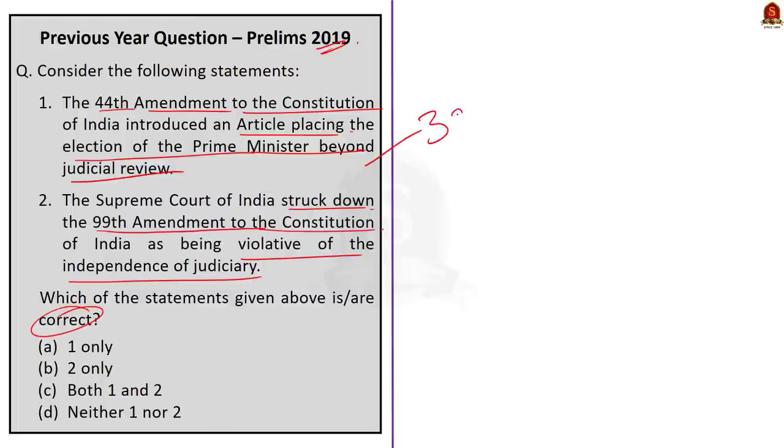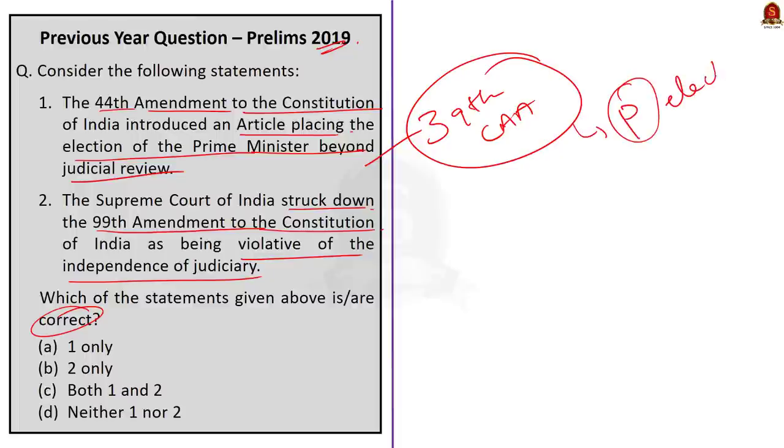The 39th Constitutional Amendment Act said that the President is not answerable to a court of law for anything done while in office in the exercise of his powers. The act also mentions that matters relating to his election should not be brought before a court but should be entrusted to a forum other than a court. The same reasoning applies equally to the incumbents of the office of Vice President, Prime Minister and Speaker. So here it should be 39th Constitutional Amendment Act instead of 44th. Statement 1 is incorrect.